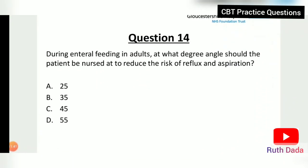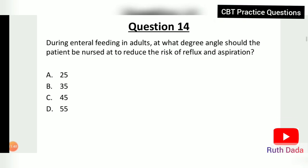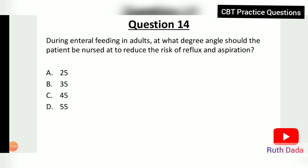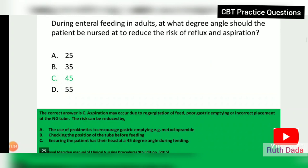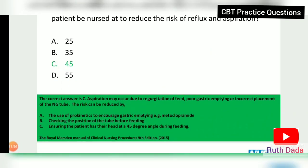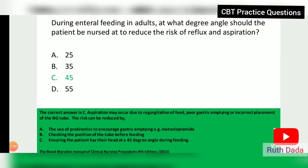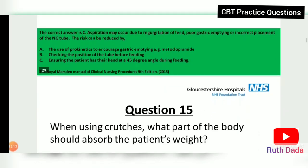Question 14: During enteral feeding in adults, at what degree angle should the patient be positioned to reduce the risk of reflux and aspiration? The answer is 45 degrees. Aspiration may occur due to regurgitation of feed, poor gastric emptying, or incorrect placement of the NG tube, but the risk can be reduced by ensuring the patient's head is at a 45-degree angle during feeding.